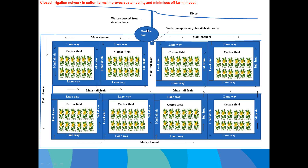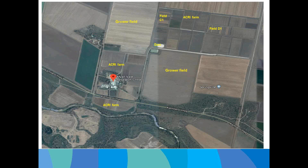In the ACRI research farm layout, water is pumped from the river into the on-farm dam, irrigated into the field, and runoff from the main tail drain is pumped back into on-farm storage — there is no escape of runoff water from the farm. This closed irrigation network has significant implications for nutrient cycling in hydrological pathways.